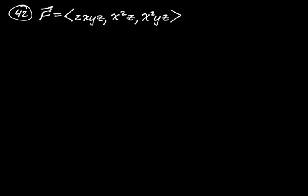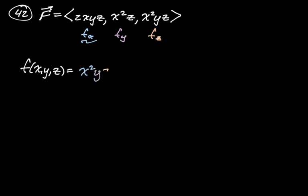Problem 42: the vector field is (2xyz, x²z, x²yz), which are partial x, partial y, and partial z. Integrating partial x (2xyz) with respect to x gives x²yz, plus an arbitrary function g(y, z). Finding partial y of our candidate potential function gives x²z. Comparing that directly to what partial y is — x²z — they match, so this isn't giving evidence against a potential function yet.